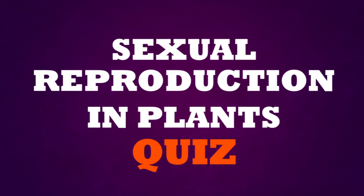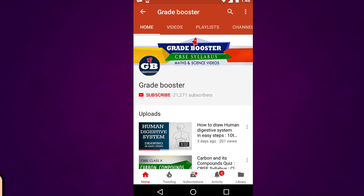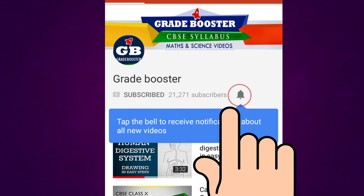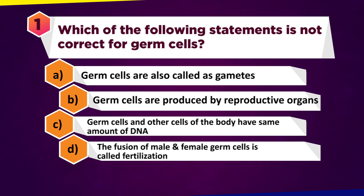Sexual reproduction in plants quiz. Which of the following statements is not correct for germ cells? A: Germ cells are also called gametes. B: Germ cells are produced by reproductive organs. C: Germ cells and other cells of the body have the same amount of DNA. D: The fusion of male and female germ cells is called fertilization.